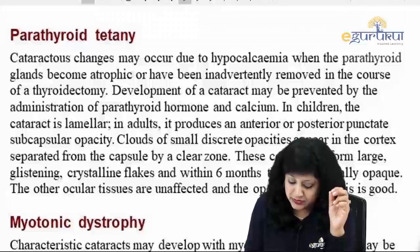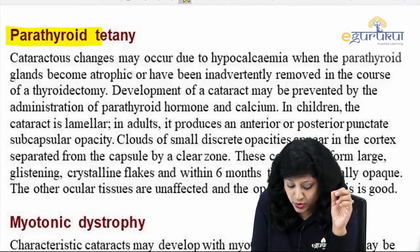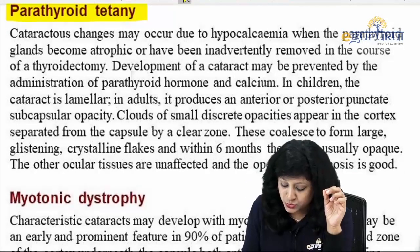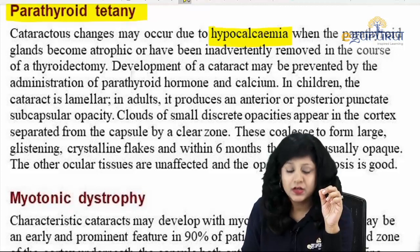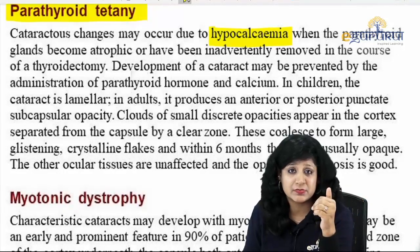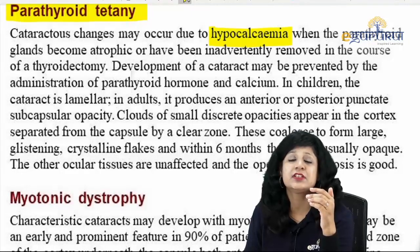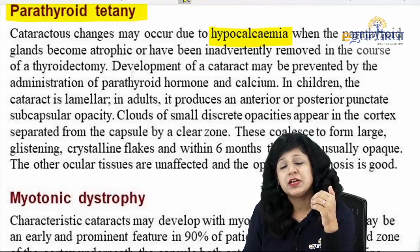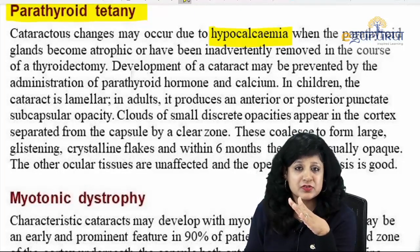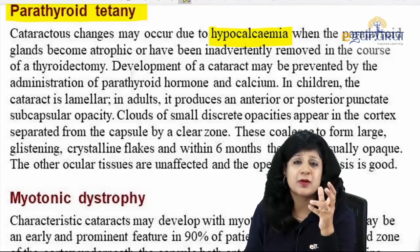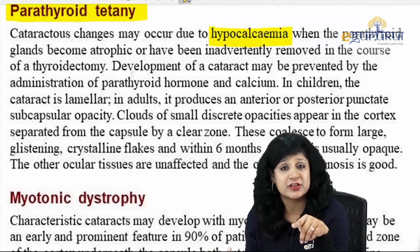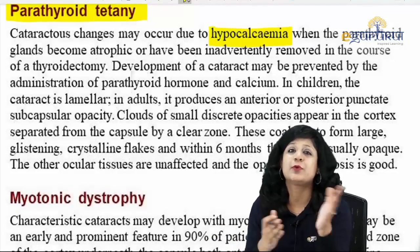Another important systemic cause of cataract is parathyroid tetany. Cataractous changes may occur due to hypocalcemia. When surgeons perform thyroidectomy, they may inadvertently remove some parathyroid tissue. Parathyroid releases calcitonin, which is responsible for calcium metabolism — this leads to hypocalcemia and tetany. It can also occur when the parathyroid becomes atrophic or is removed during thyroidectomy.